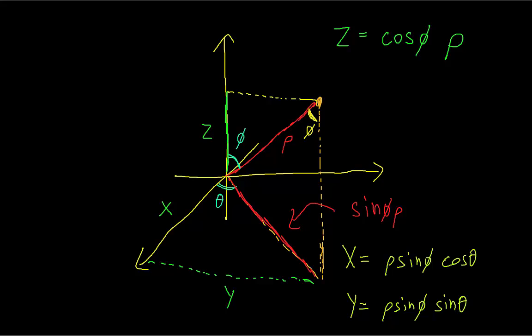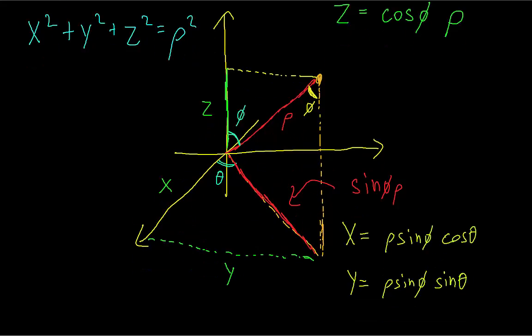Another useful relation is we can see that x squared plus y squared plus z squared equals rho squared, which is just an application of the Pythagorean theorem two times.